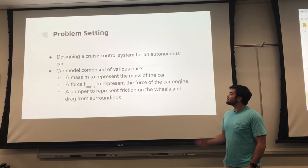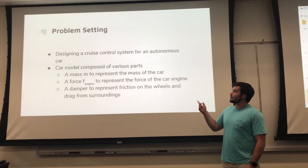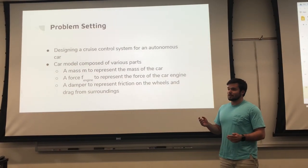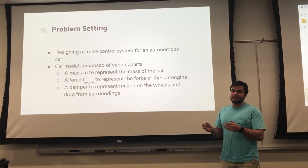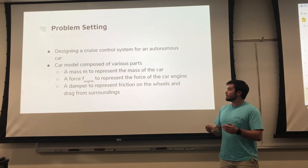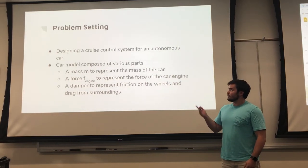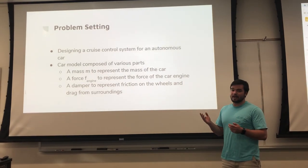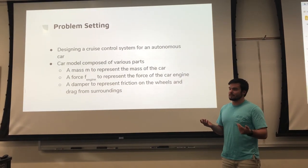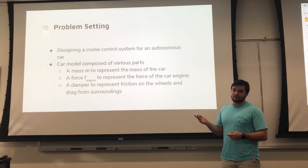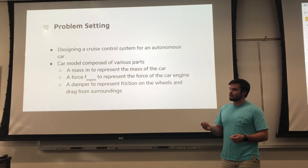Our problem is designing a cruise control system for an autonomous car. This cruise control will speed up to a desired point and maintain that point, not go too far over or under. For the model, we have a mass to represent the car's mass, a force F for the engine that's the applied force, and a damper that represents friction of the wheels and air resistance and drag from the surroundings.